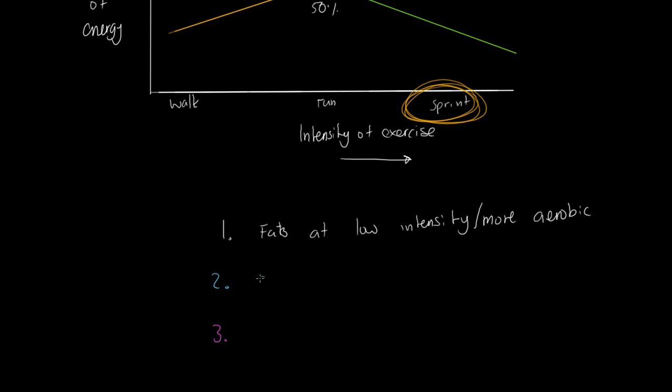Now, secondly, my second implication is that carbs, that substrate of carbohydrate, they are utilised in a higher proportion at higher intensity. So at higher intensity activity, carbs are utilised more. And we can say even more anaerobic.